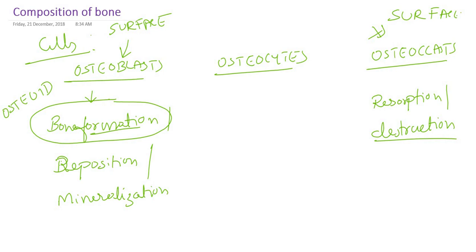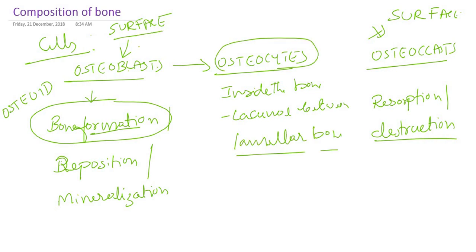Osteoblasts and osteoclasts are present on the surface of the bone, and the exact location of these cells will be explained in the next video. Whereas osteocytes are derived from osteoblasts — they are inside the bone, not in the bone marrow, but inside the dense part of the bone, present in the lacunae between lamellar bone. So osteoblasts are responsible for new bone formation, osteoclasts for resorption. That's about the composition of bone. Thanks for watching.